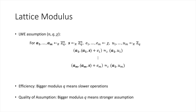The second reason is related to the quality of the LWE assumption. The hardness of LWE is related to what is called the noise-to-modulus ratio. The greater the size of the modulus is compared to the size of the errors, the easier the LWE problem becomes. So we want to set q as small as possible to base our security on the hardest variant of the LWE assumption.